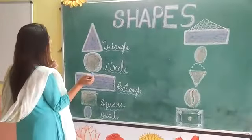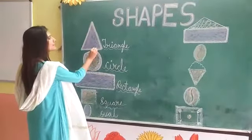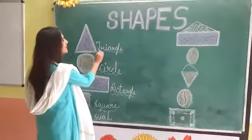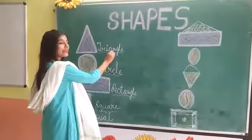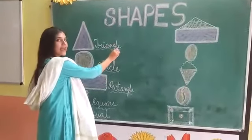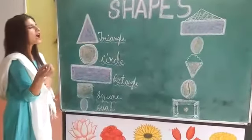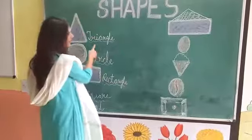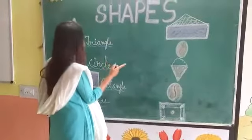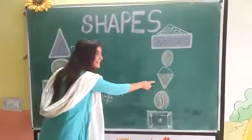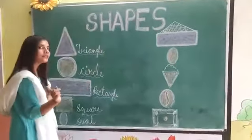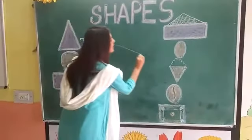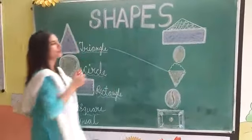Students, tell me which shape is this? This is a triangle. T-R-I-A-N-G-L-E. Triangle. And tell me which figure looks like a triangle? Ice cream. Yes, ice cream is similar to the triangle. So students, let's match very carefully.